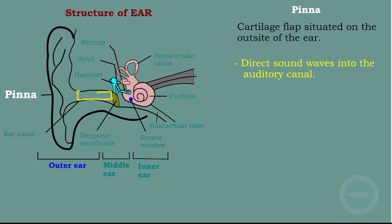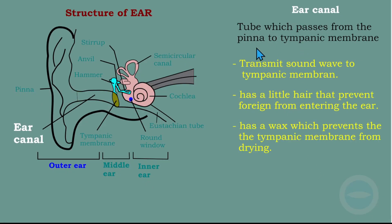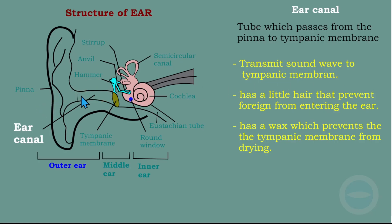The next part is the ear canal. The ear canal is a tube which passes from the pinna to the tympanic membrane. Its function is to transmit sound waves to the tympanic membrane. It also has little hairs that prevent foreign objects — for example, dust or small insects — from entering the ear. This hair inside the ear canal traps those small particles.